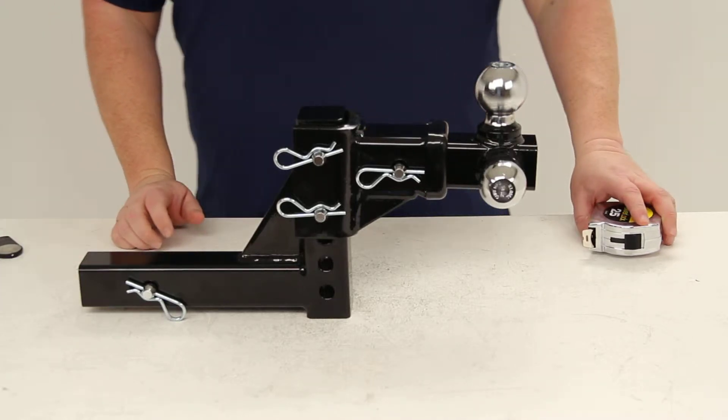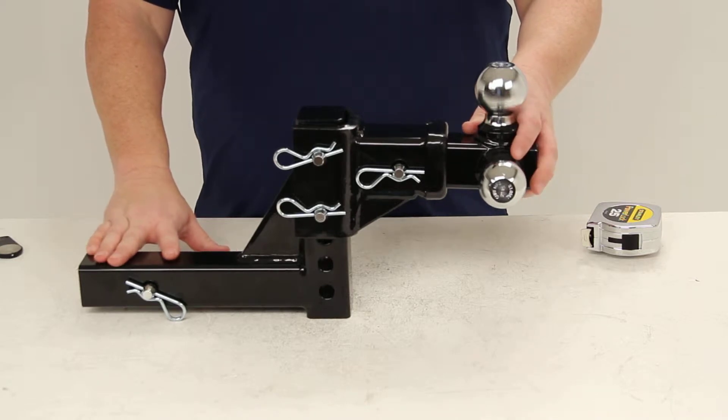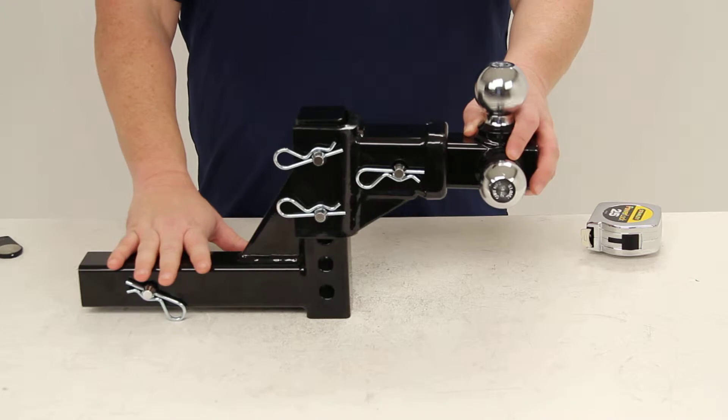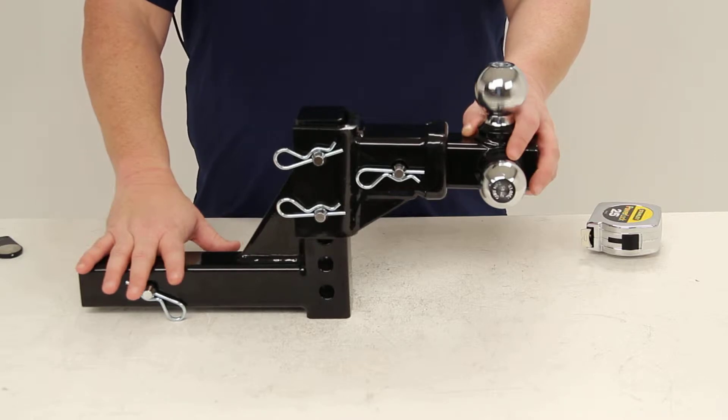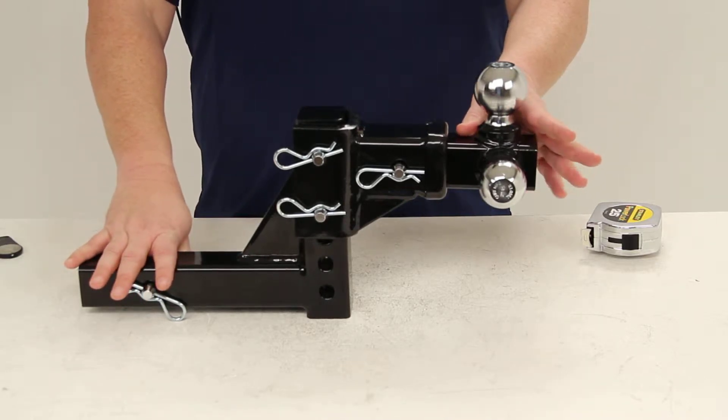Today we're going to take a look at our Curt multi-ball adjustable ball mount for two-inch trailer hitches, number D900. For your multiple towing needs, this ball mount has an adjustable height: a five and three-quarter inch drop to a five and three-quarter inch rise. The adjustable height fits almost any application.